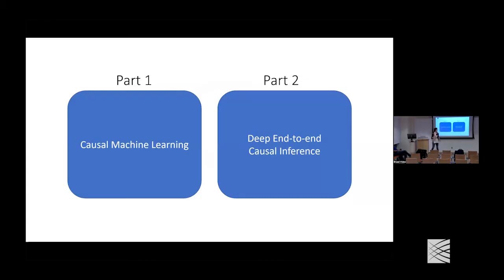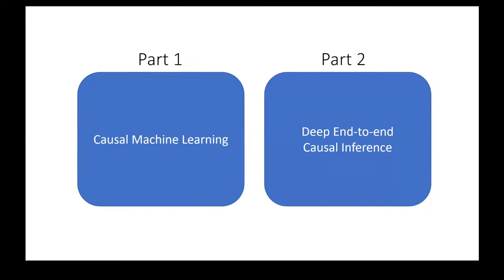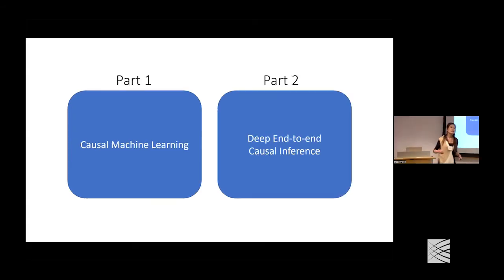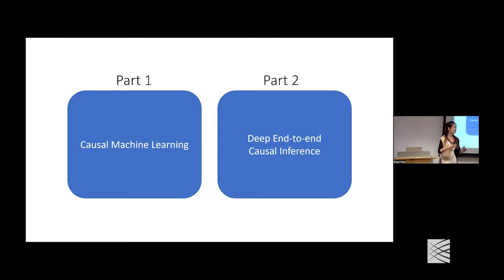Today's talk has two parts. The first part covers generic causal machine learning: what's causal, what's causal discovery, and basic causal inference. The second part focuses on deep end-to-end causal inference, making large-scale, real-world-applicable machine learning algorithms that can help society, patients, customers, and users.